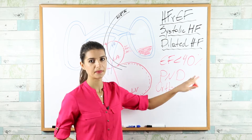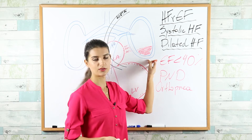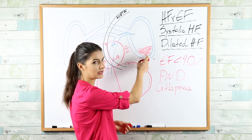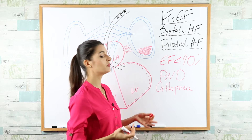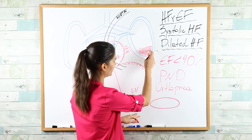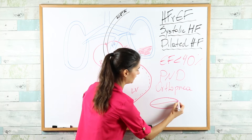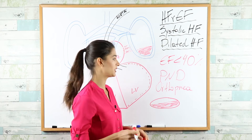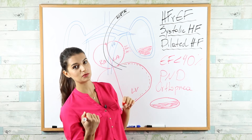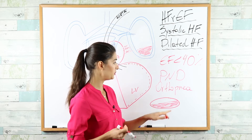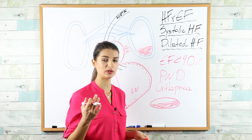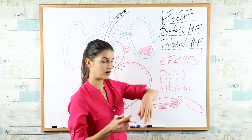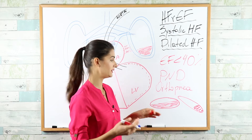When standing upright, fluid accumulated in the lung sits at the base due to gravity. But when you lie down, that fluid spreads out and may occupy half the lung, making breathing very difficult — that's paroxysmal nocturnal dyspnea. People with lung fluid try to sleep with many pillows to keep their lungs more vertical so gravity pulls fluid back to the base — this is orthopnea.